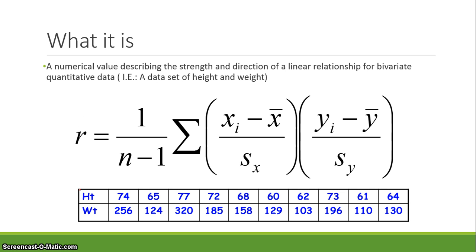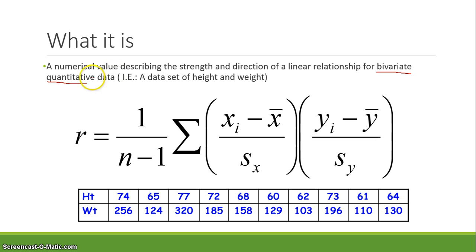The definition of a correlation coefficient is a numerical value describing the strength and direction of a linear relationship for bivariate quantitative data. Bivariate means two variables, and quantitative just means numbers — so a two-variable, numerical data set.